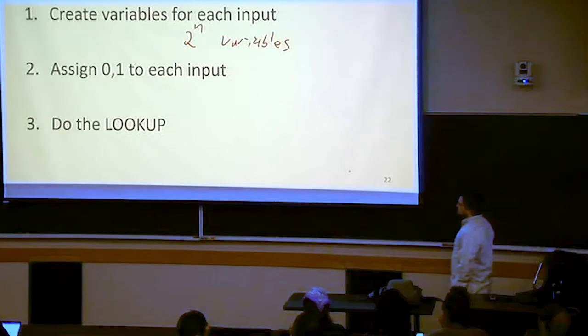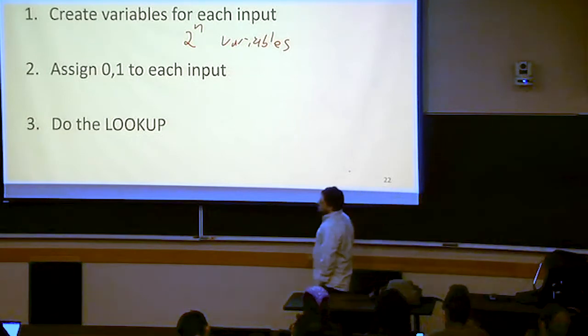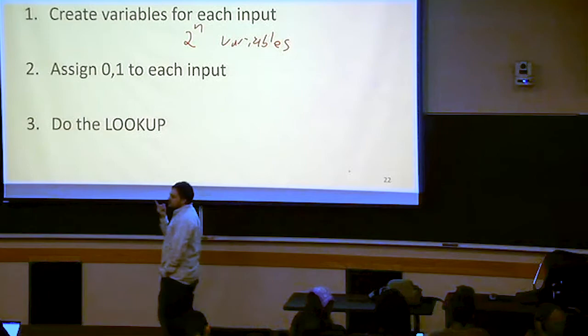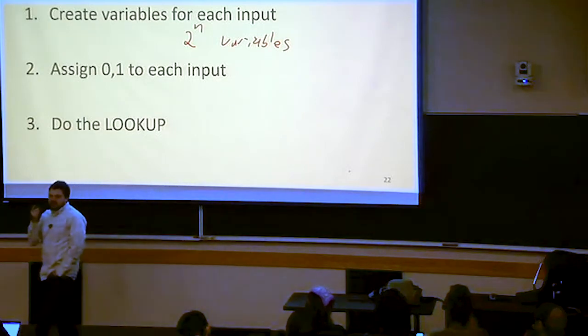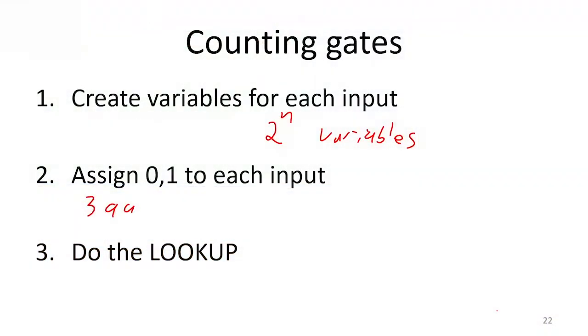How many gates does it require in order to assign 0 or 1 to a single variable? What's the maximum number of gates that could require? Three gates each, or three times 2 to the n gates total.